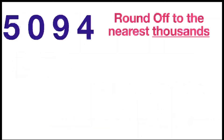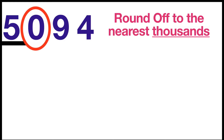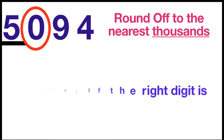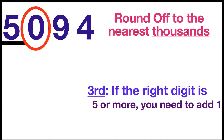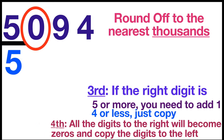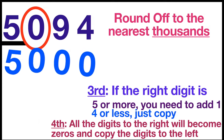Let's have another example: 5,094 round off to the nearest thousands. Again, underline digit 5 at the thousands place. Look to the right. If the right digit is five or more, you need to add one; but if it is four or less, just copy. Since our right digit is zero, which is four or less, we will just copy digit 5. Then all the digits to the right will become zeros. So the answer is 5,000.